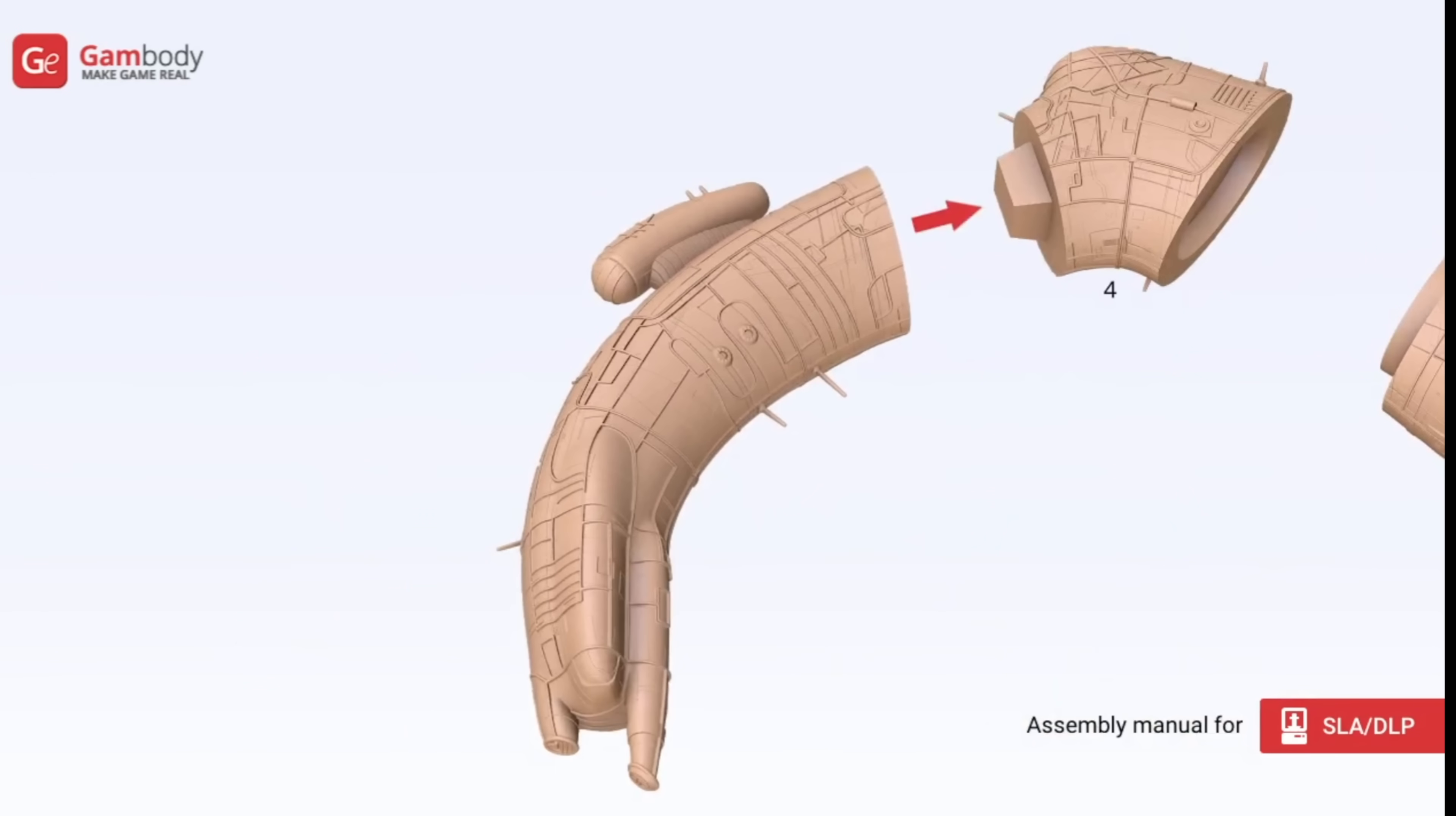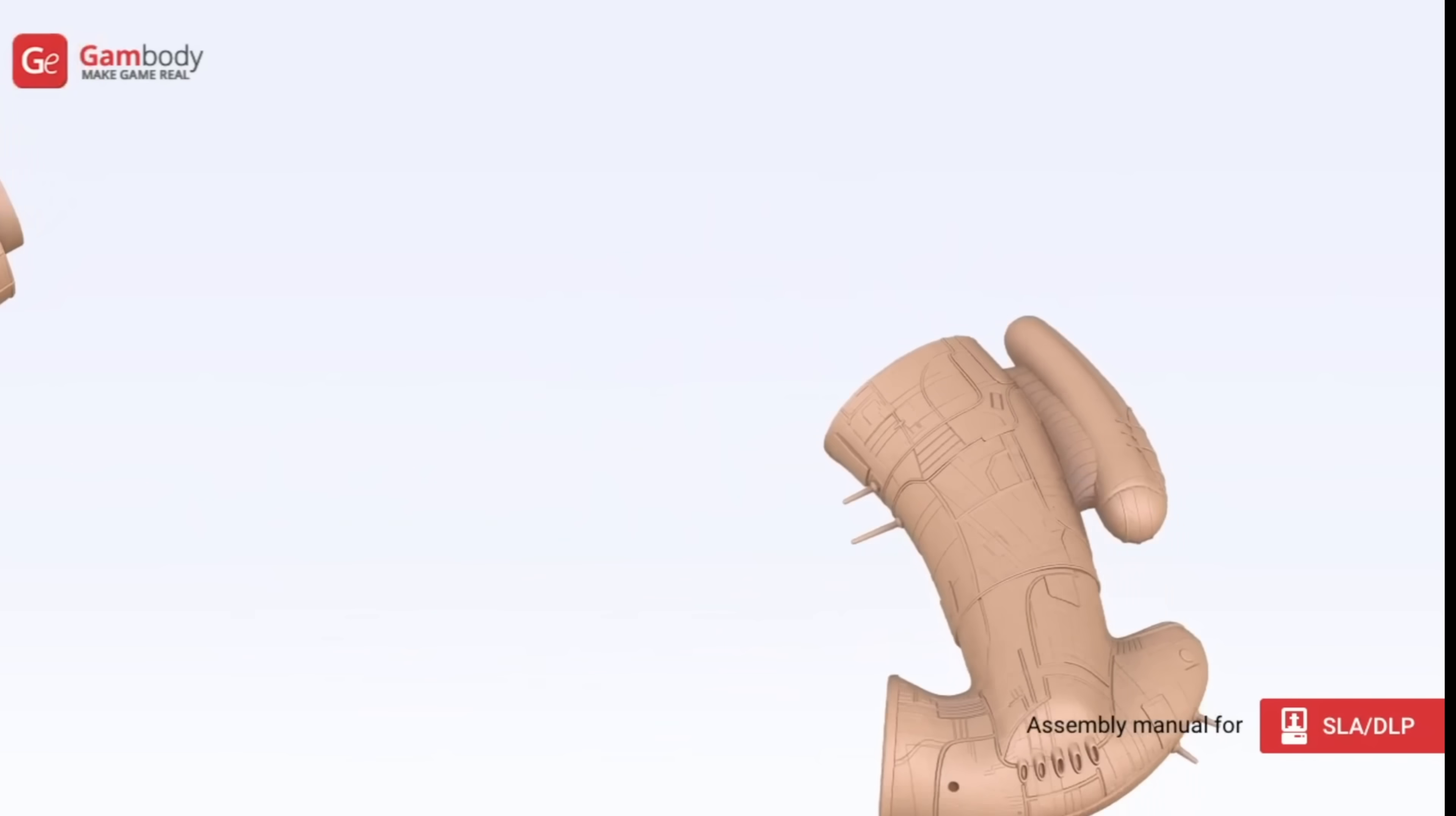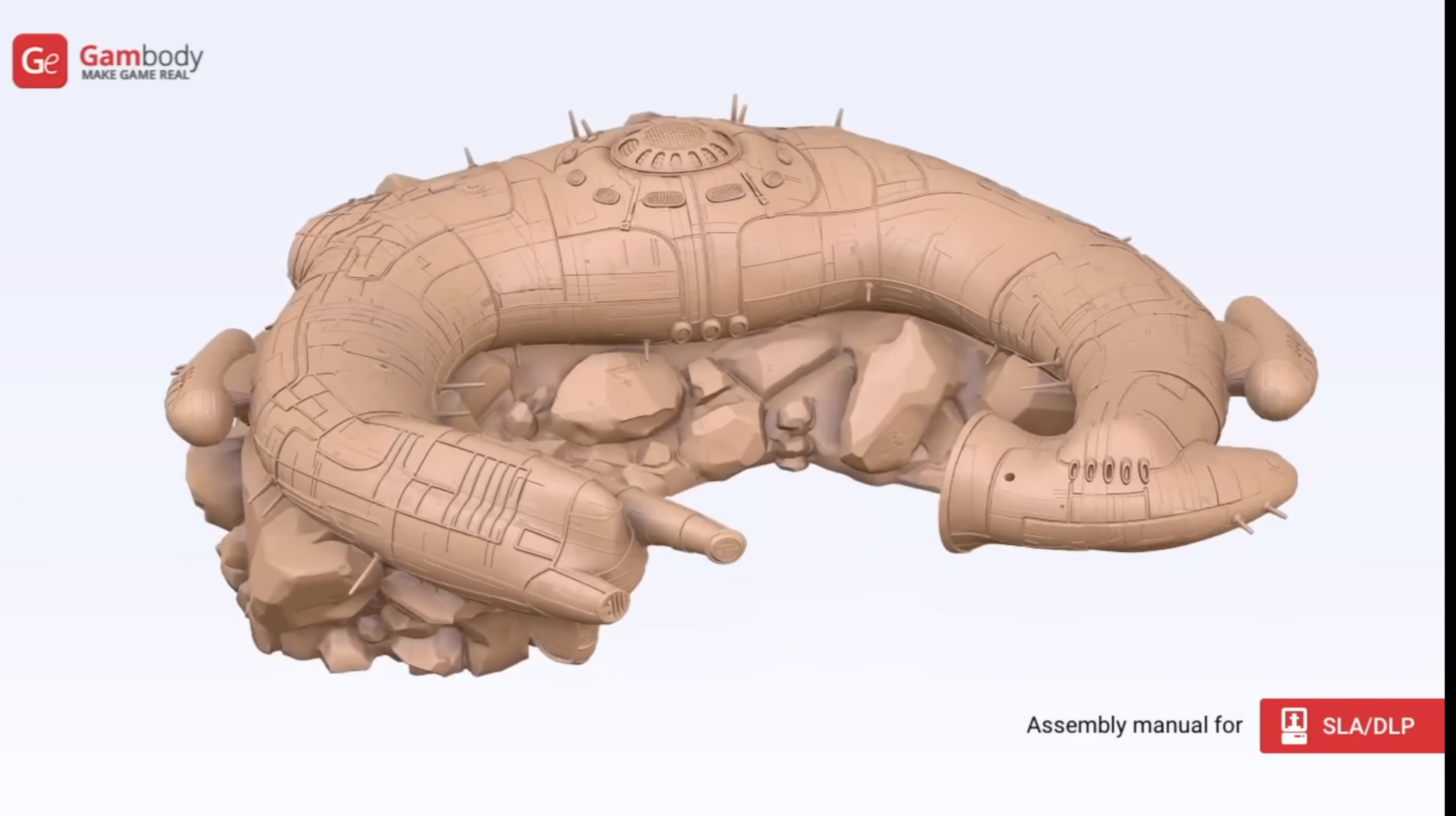So we have downloaded our STL files. These are pre-sectioned pieces of the full model, which means that we can make our final model a lot larger than if we tried to print as one on the comparatively small build plate of the resin printer. It enables us to effectively have the component parts of a kit that we can then assemble and paint ourselves.